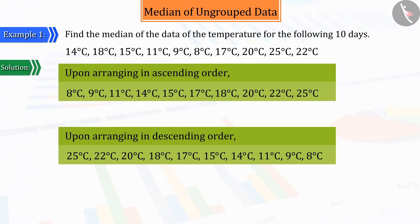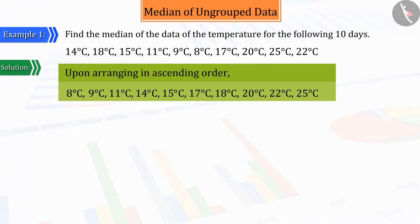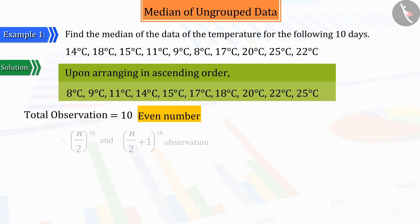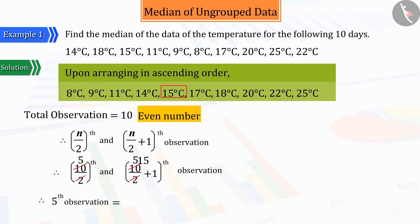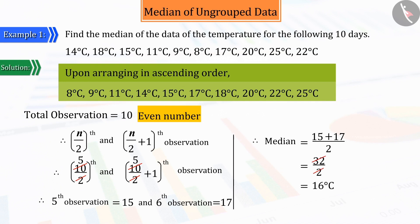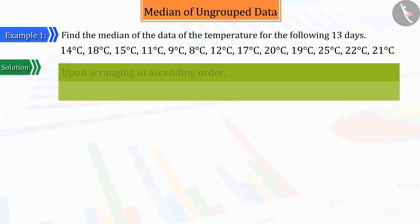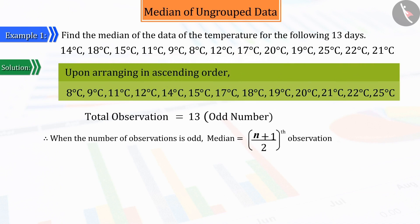Then, we assess whether the number of observations is even or odd. As you can see, the total number of observations given is ten, which is even. We have learnt that if the number of observations is even, then to get the median, we have to find the mean of the (n/2)th observation and the (n/2 + 1)th observation, from which we get the median of the entire data as 16 degrees Celsius. And if the number of observations is odd, then the median would be the value of the ((n+1)/2)th observation.